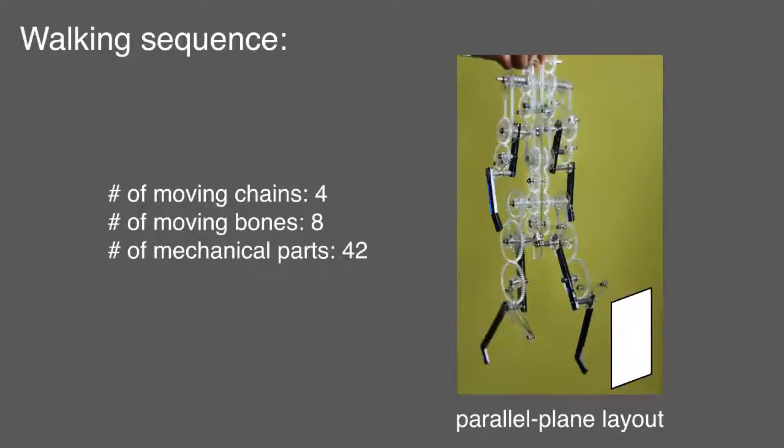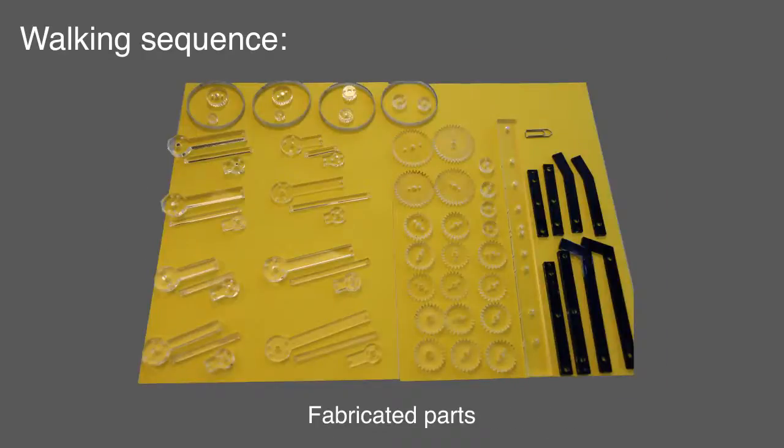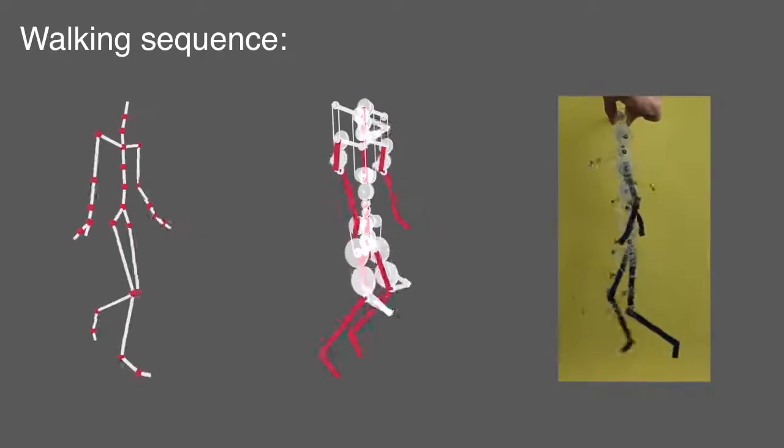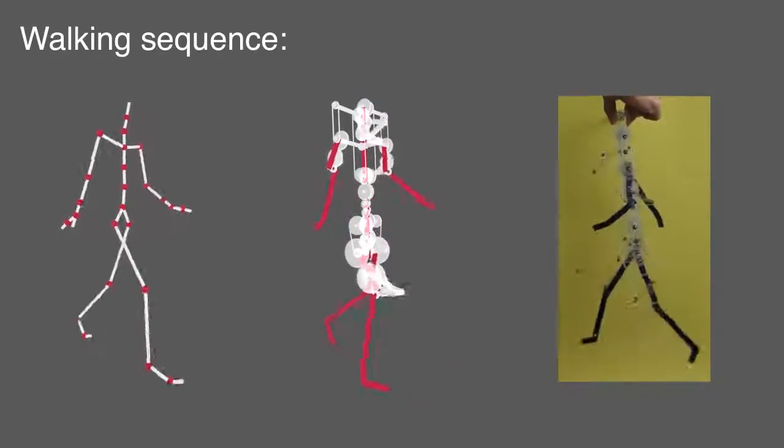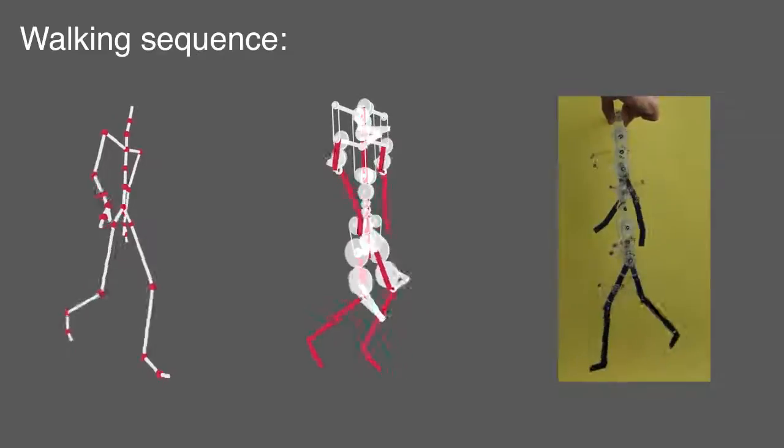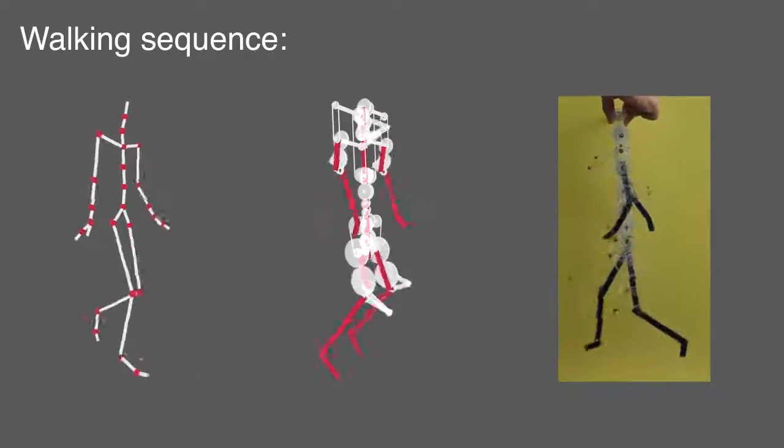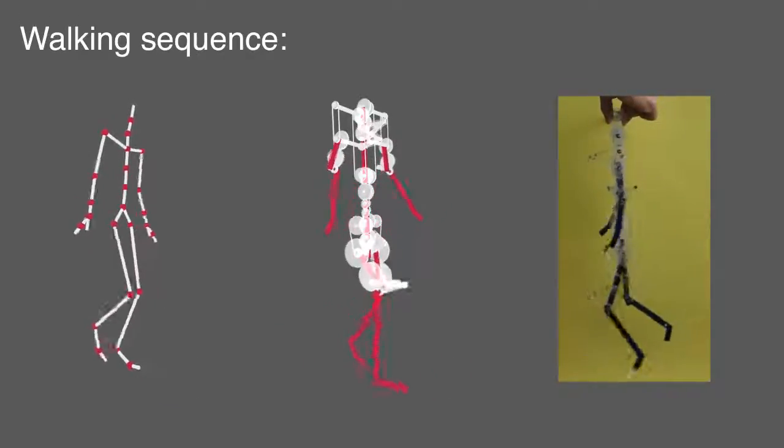Here we show physical prototypes for some of our examples. In the walking example, the motion of the moving limbs are projected to parallel planes. The torso is oriented parallel to this motion plane and is used as the main support structure of the mechanical figure. Pulleys are used to propagate the input crank motion to the moving limbs. The whole mechanism is driven by a single input motor.